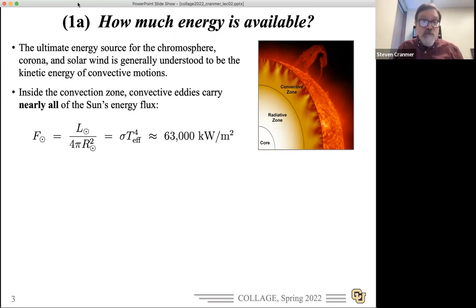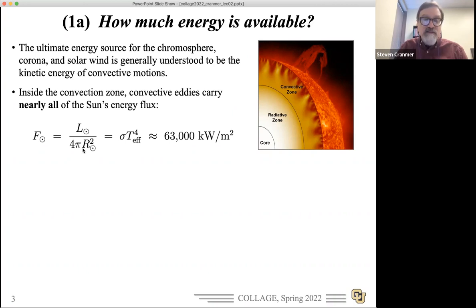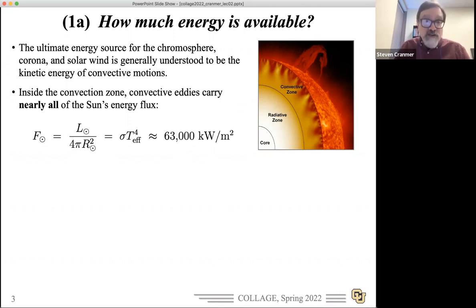Throughout the convection zone, these convective eddies carry pretty much the entire energy flux generated in the core of the sun. You can compute that — extending it all the way up to the surface, you can estimate it as the solar luminosity divided by the surface area of the sun, also written as the Stefan-Boltzmann constant times the effective temperature to the fourth. This is the actual equation that defines effective temperature. I've chosen SI units here, and we get a rather large number: 63,000 kilowatts per meter squared being transported upward through the convection zone.